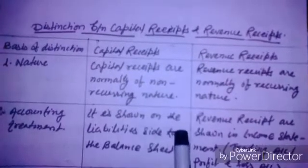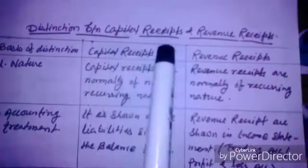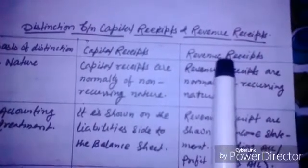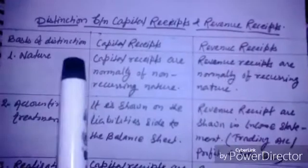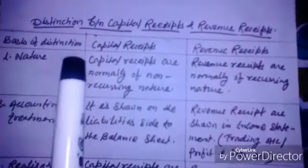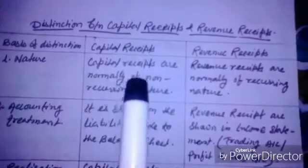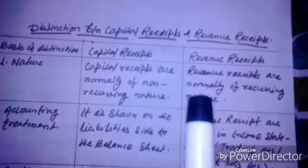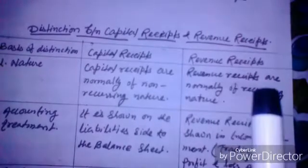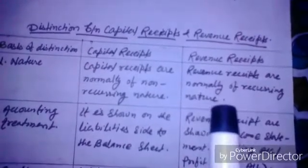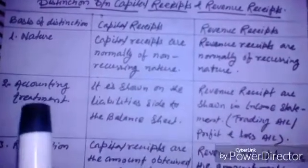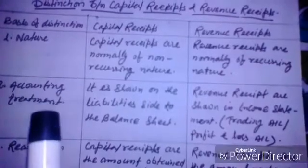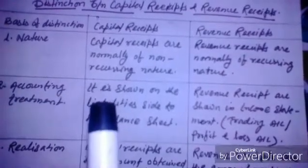Friends, today we will discuss distinctions between capital receipt and revenue receipt under the chapter capital and revenue expenditures and receipts. The first basis of distinction is nature: capital receipts are normally of non-recurring nature, whereas revenue receipts are normally of recurring nature.